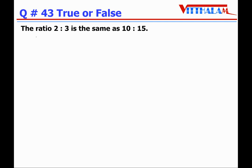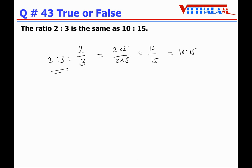Question 43: The ratio 2:3 is the same as 10:15 — True. 2:3 is 2/3. If I multiply by 5, then 2×5 / 3×5 equals 10/15, that means it is 10:15. Both are equivalent, so it is True.